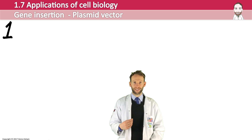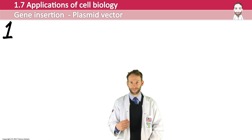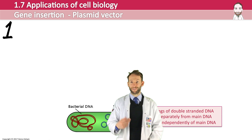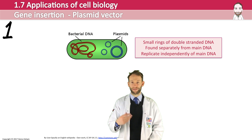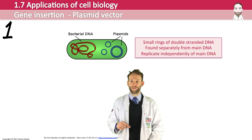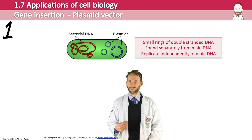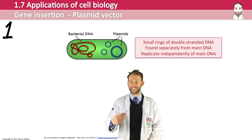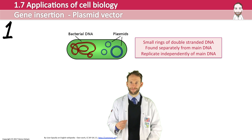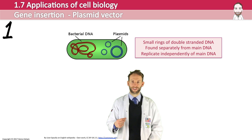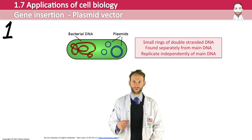One type of vector that is used a lot is a plasmid. You should all be familiar with plasmids from when we studied prokaryotic cells — they're small loops of double-stranded DNA found in bacterial cells, and they replicate independently of the main DNA. They're very easy to isolate and manipulate because of how small and simple they are.